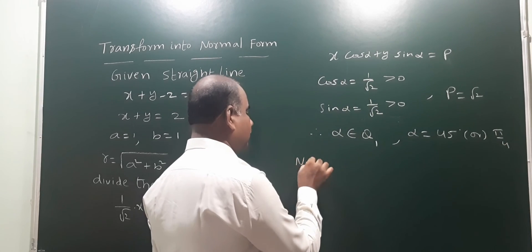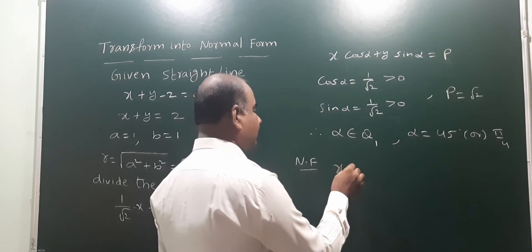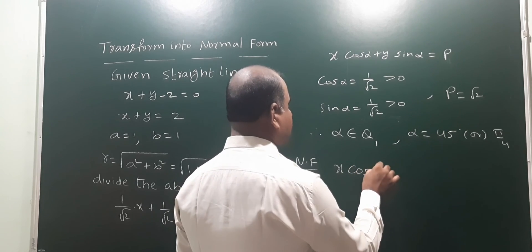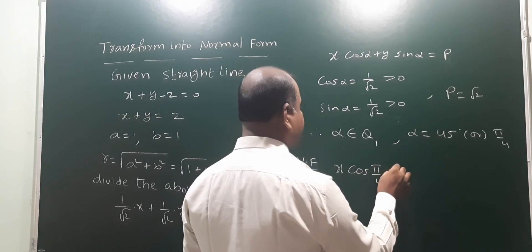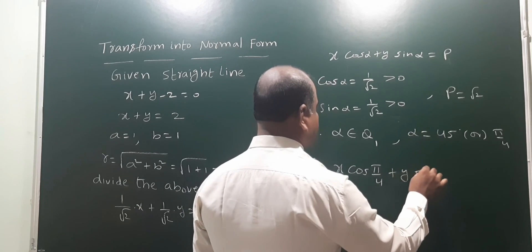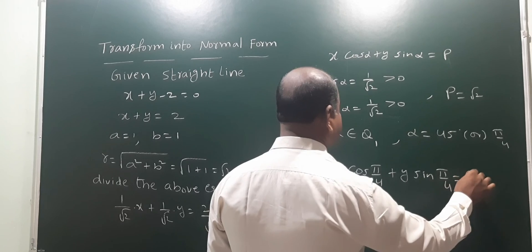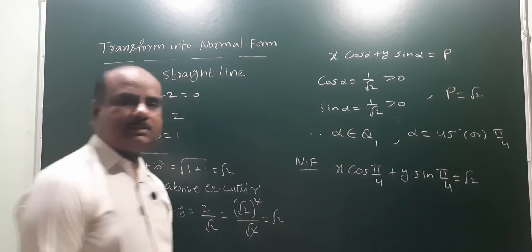Therefore, the normal form is x cos alpha, that means x cos pi by 4 or 45 degrees, plus y sin pi by 4 equals root 2. That is the answer.